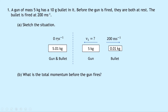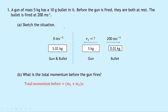Looking at the situation, we have a speed of 0 meters per second to begin with. Momentum is mass times speed, so if speed is 0, total momentum is 0. We can prove this by substituting into the expression for total momentum before: (m1 + m2) × u = (5 + 0.01) × 0 = 0 kilogram meters per second.